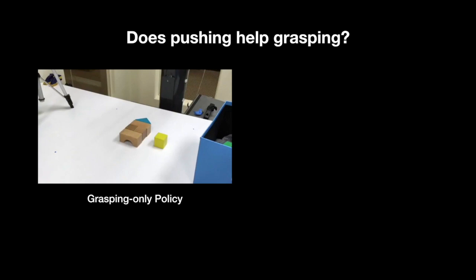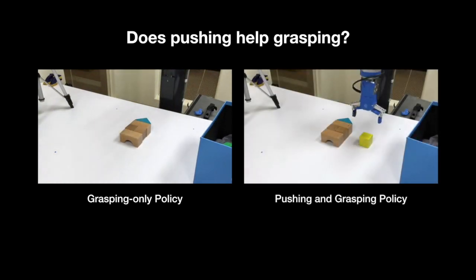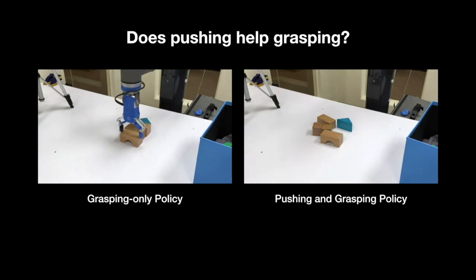One of the first questions that we aimed to answer was whether pushing actually helps grasping. We did several controlled experiments by training grasping-only policies as well as pushing and grasping policies with our method. During training, the robot explores pushes and grasps on randomly dropped objects in the workspace, but during testing, the robot is exposed to new and challenging arrangements of blocks.